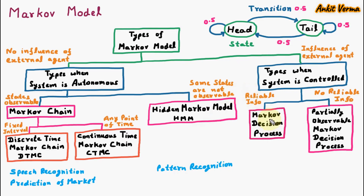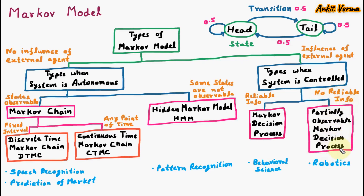The application of Markov Decision Process is behavioral science — here we have reliable information so we can study behavior. The application of Partially Observable Markov Decision Process is robotics — here we don't have reliable information, just like a robot that is not aware about the environment. So these are the applications of the different types of Markov Model. That's all for today. Thank you.